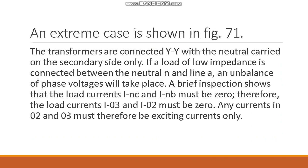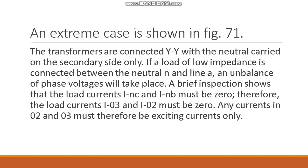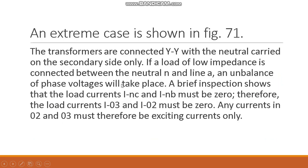If a load of low impedance is connected between the neutral and line A, an unbalance of phase voltage will take place. A brief inspection shows that the load currents INC and INB must be zero, and therefore the load currents I3 and I2 must also be zero.